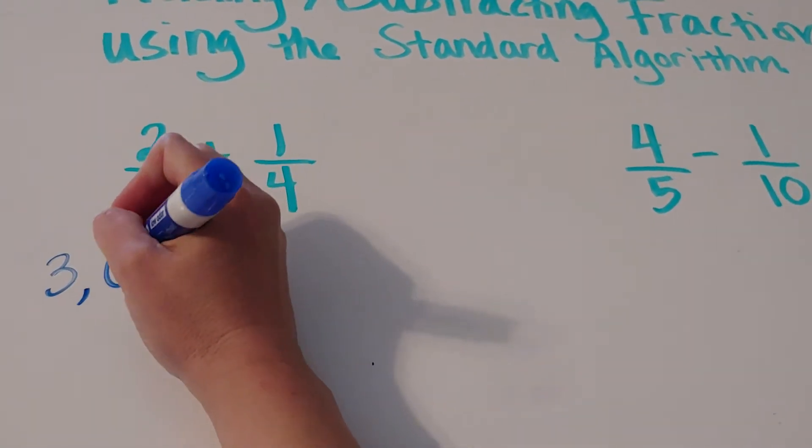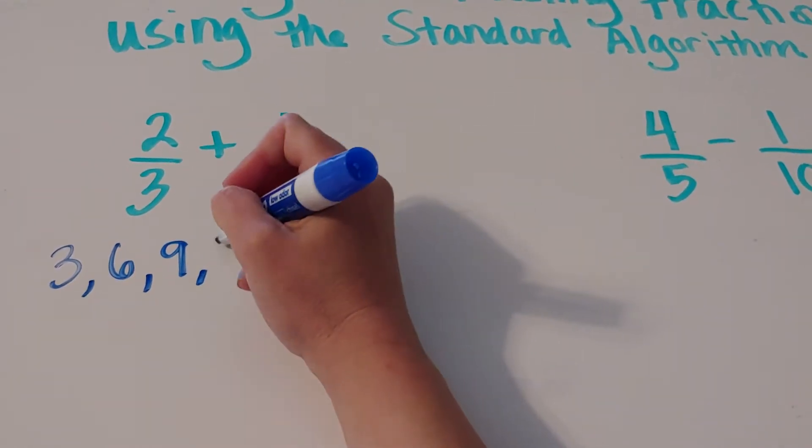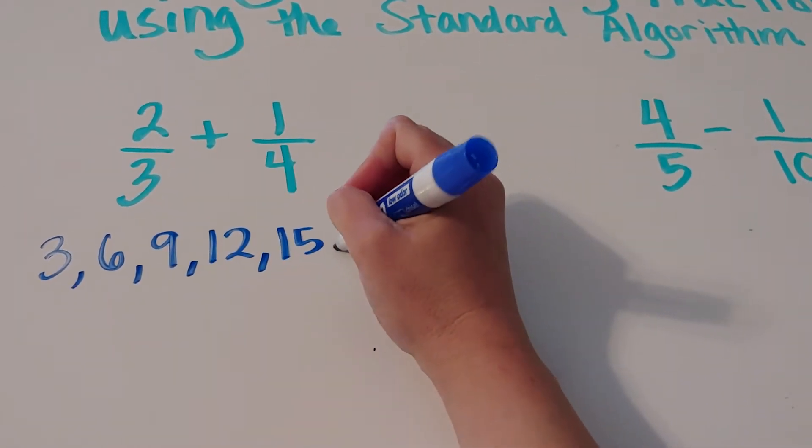So how you want to teach kids how to find the common denominator is that you want to think of all of your multiples of 3. So 3 times 1, 3 times 2, 3 times 3. And you keep writing all your multiples of 3.